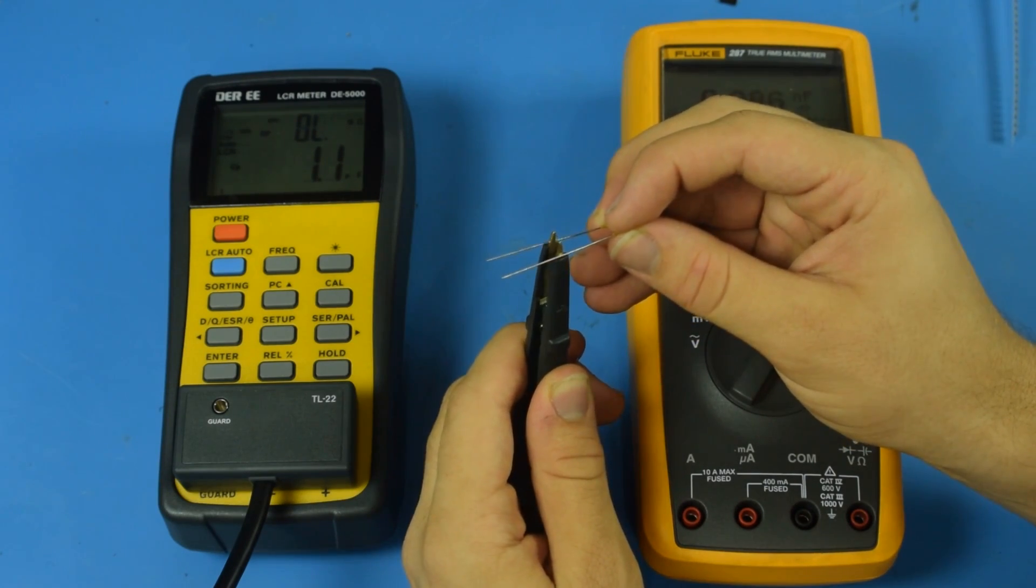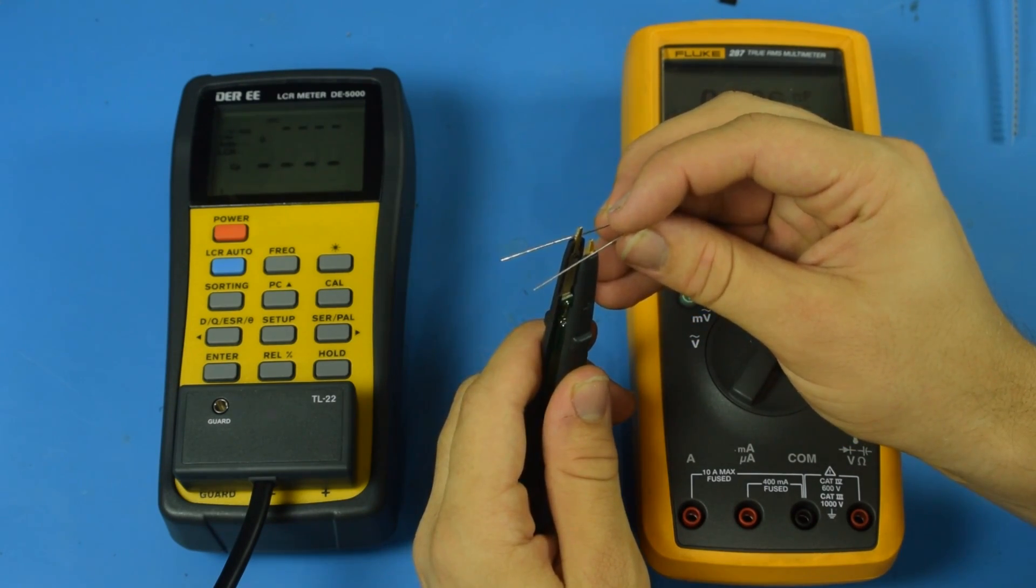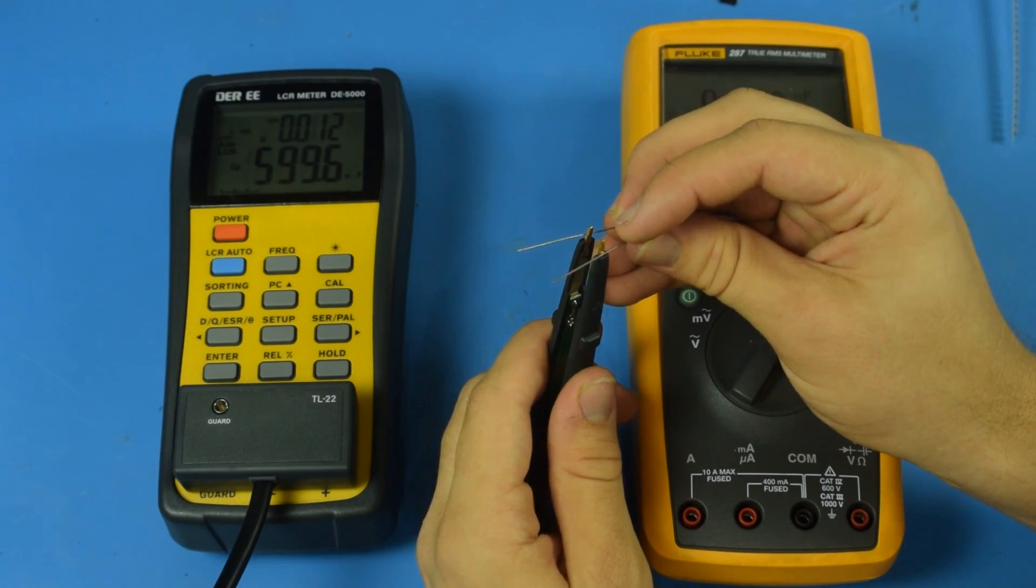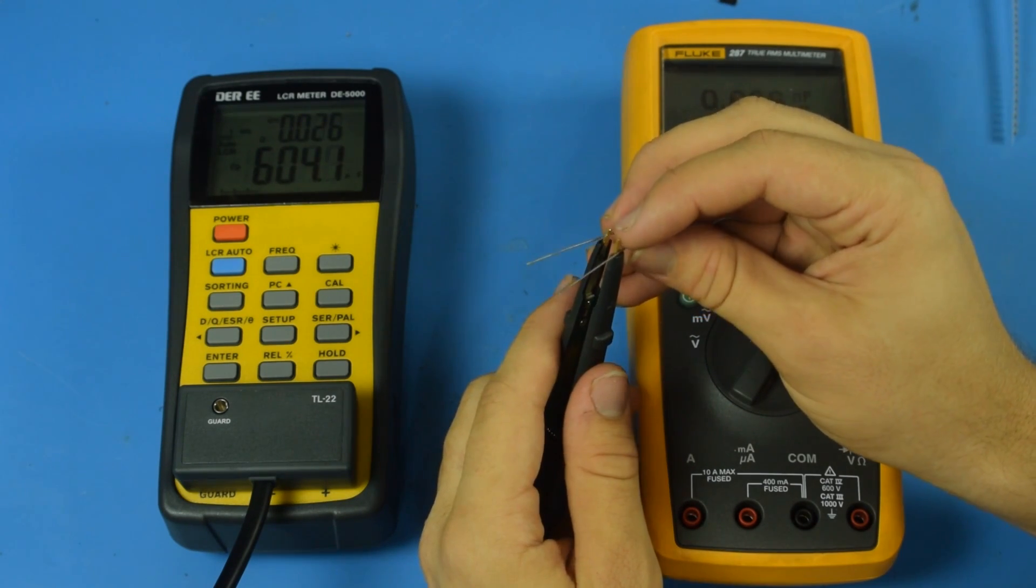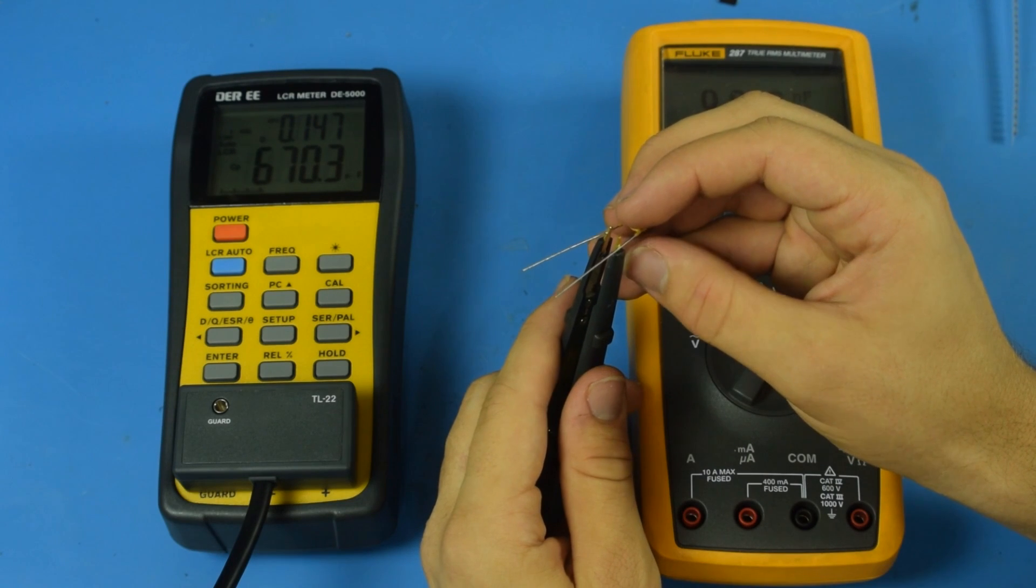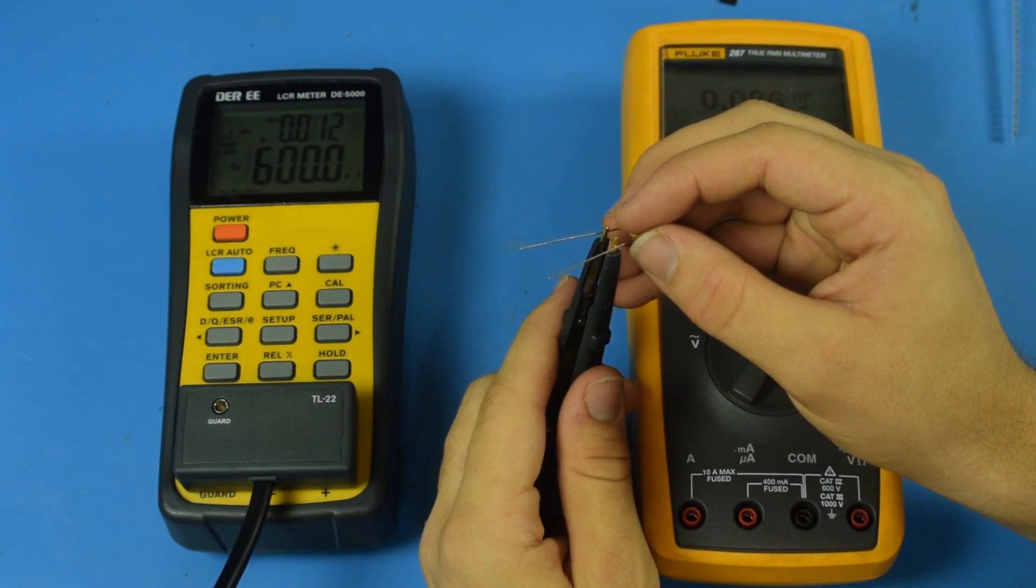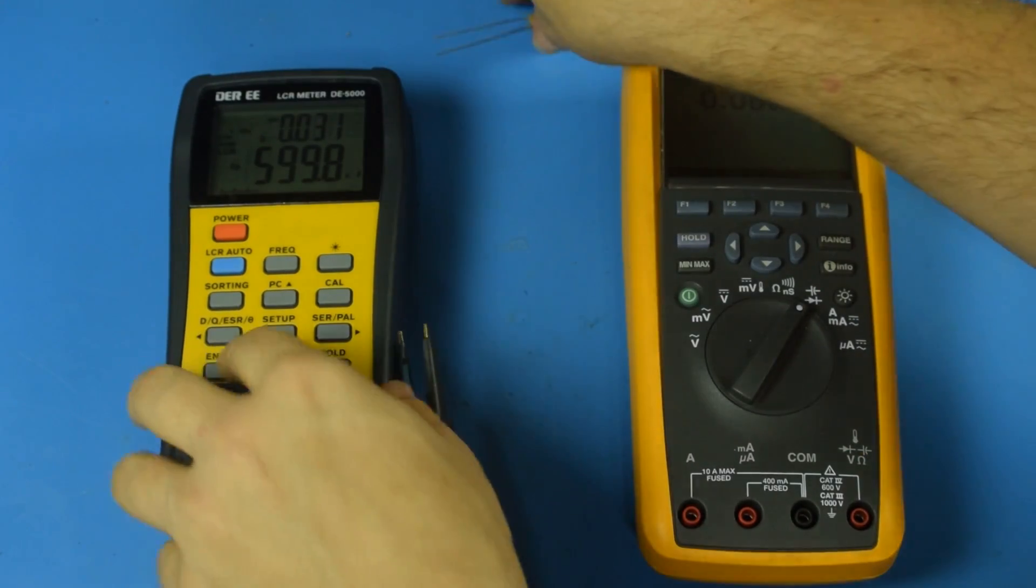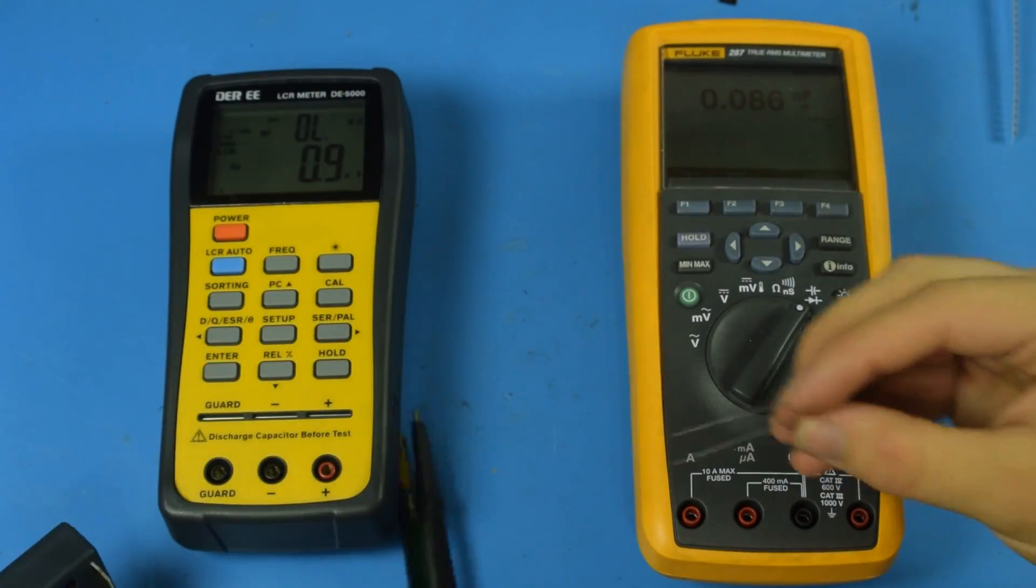Oh, it doesn't seem to be doing too great here. Oh, there we go. 600 picofarads. Perfect. Yeah. That thing just paid for itself right there. Because that was really bugging me.